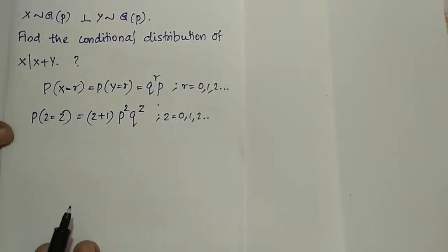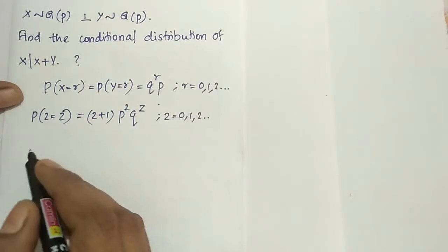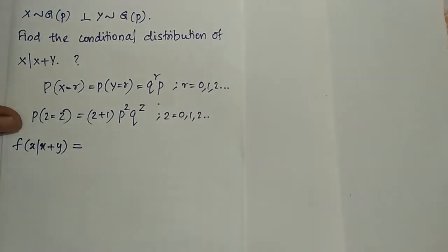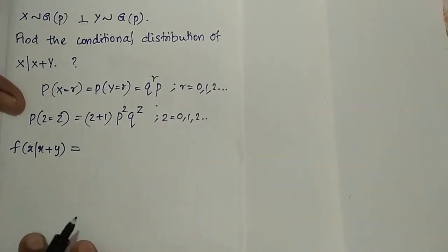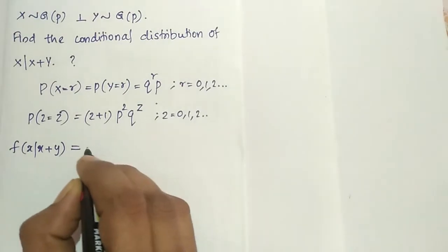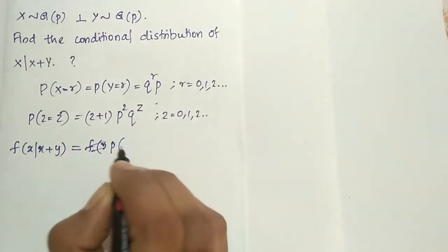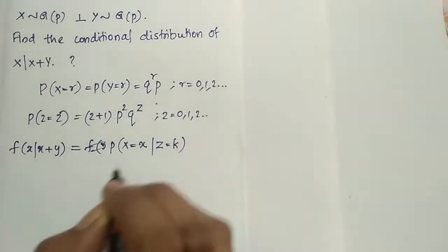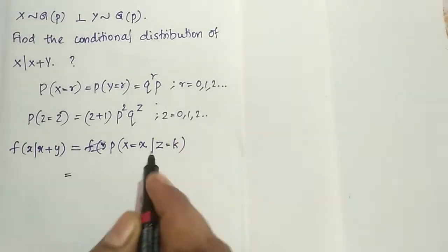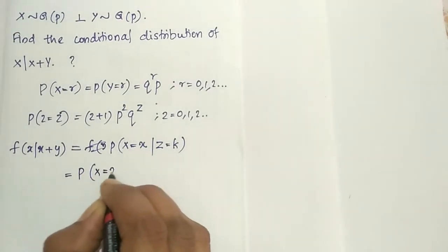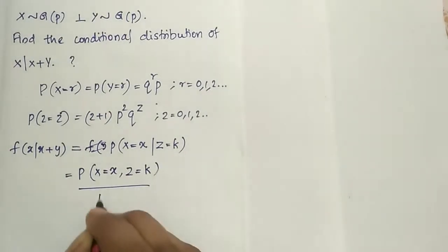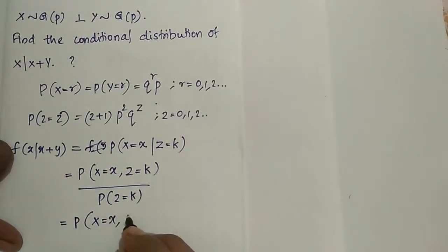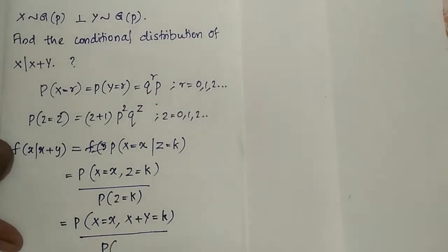Here we have to find the conditional distribution of X given X plus Y. So f of X given X plus Y, using the definition of conditional probability, can be written as probability X equal to x given X plus Y equal to k, which equals probability X equal to x and Z equal to k, divided by probability Z equal to k. This is probability X equal to x and X plus Y equal to k, divided by probability Z equal to k.